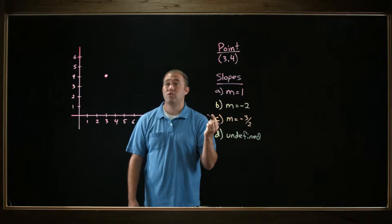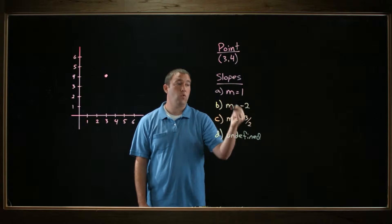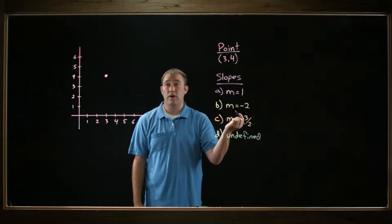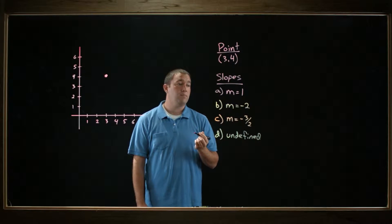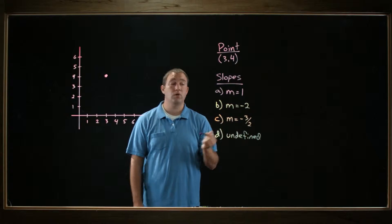Now we're asked to draw four different lines with four different slopes. The slope is a ratio, rise over run. So what I want to do is write each of these as a ratio.